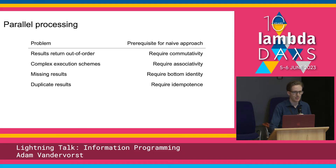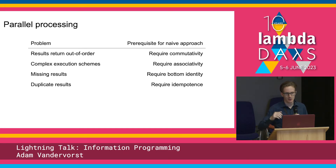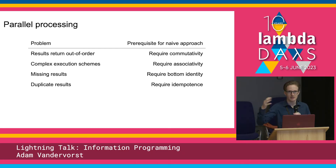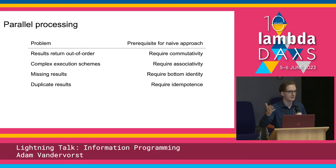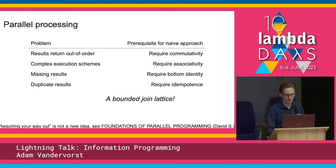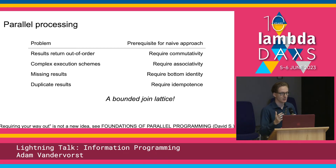So, parallel processing. There are a few problems that naive solutions have: with parallel processing your results can return out of order, you can have complex execution schemes with communication between threads, you can have missing results, and trying to solve the missing results, you can end up with duplicate results. There are laws for each of these that we can implement — the algebraic data structure that implements all these laws is the bounded join lattice. Requiring your way out of the problems of parallel processing is not a new idea, and 'Foundations of Parallel Programming' goes into that in a lot of detail.